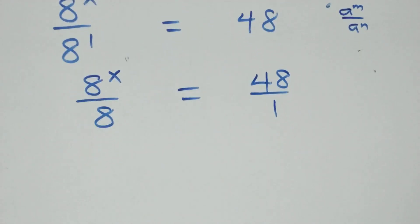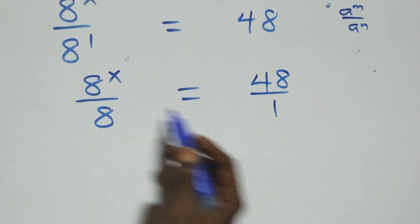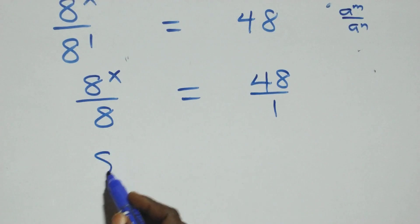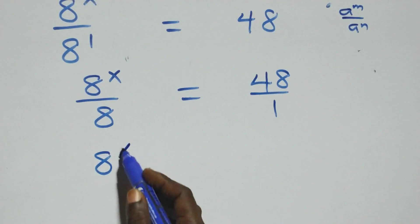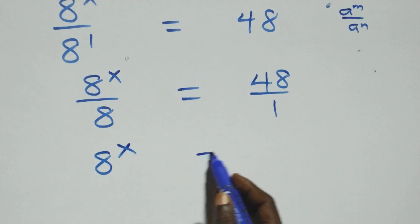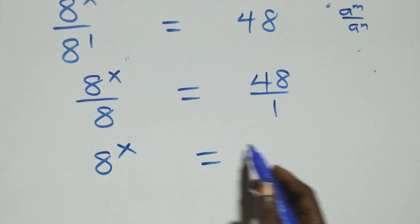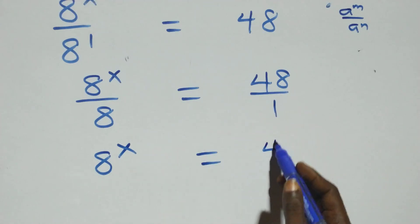The next step: we cross multiply. 8 raised to power x times 1 is the same thing as 8 raised to power x, and that equals 48 times 8.